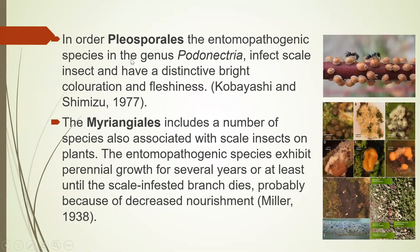In the order Pleosporales, the entomopathogenic species include Podonectria, which infects scale insects and has very distinctive bright coloration — more easily seen in rainforests. Then the Morangiales include species also associated with scale insects on plants, where the entomopathogenic species exhibit perennial growth for several years, at least until the scale-infested branch dies. So perhaps the fungi are parasitizing the scales, but the scales are parasitizing the leaf, and decreased nutrition eventually kills the whole lot.